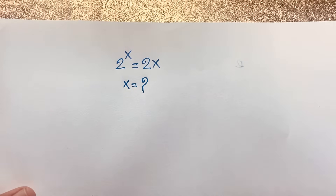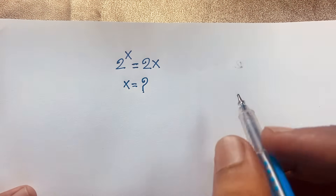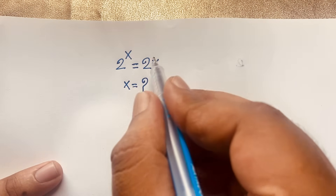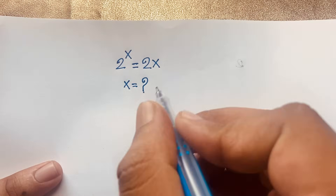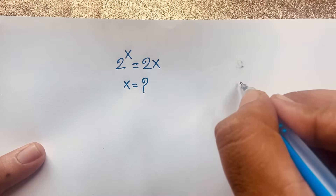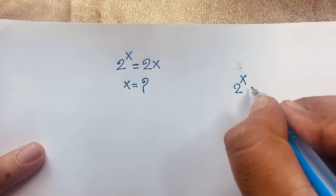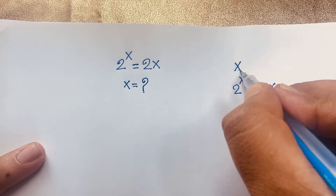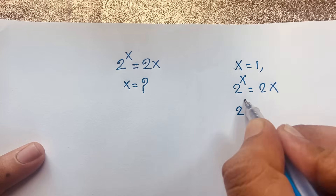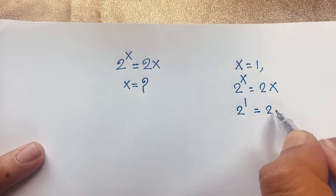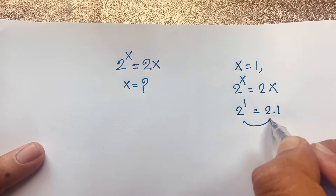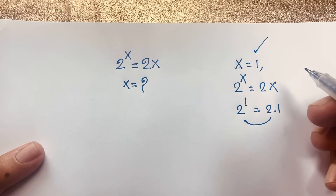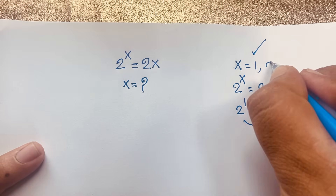Hello everyone, welcome to Russia's Classroom. Today we have solved a nice math Olympiad question. The question is: 2 to the power x is equal to 2x. How to solve this interesting math problem? If you think x is equal to 1, then 2 to the power 1 is equal to 2 times 1 — both sides are equal, so x equals 1 is a right answer.